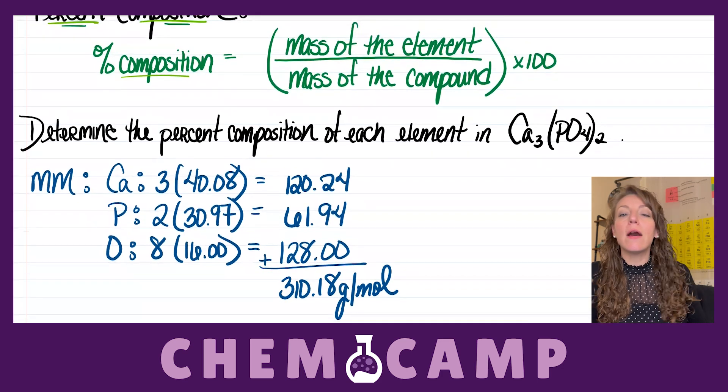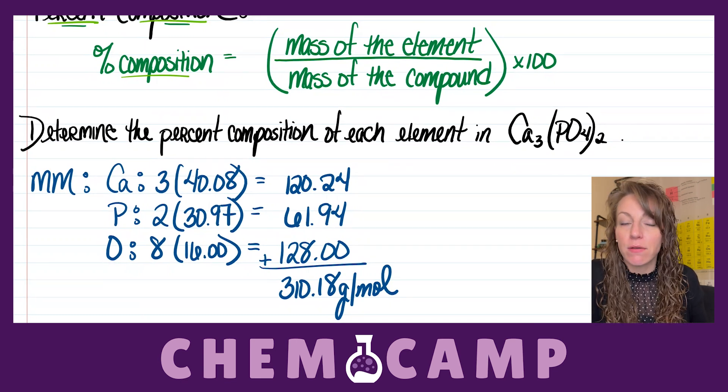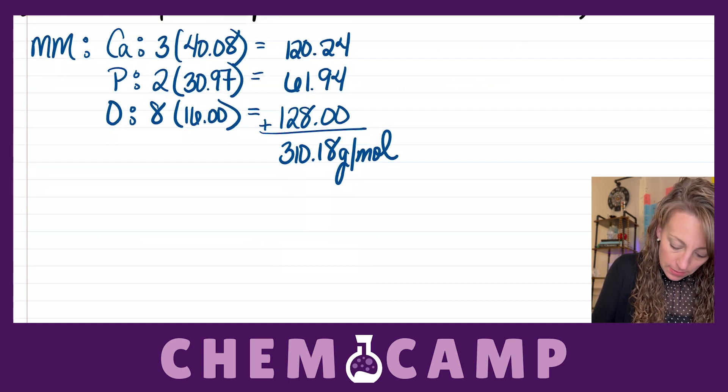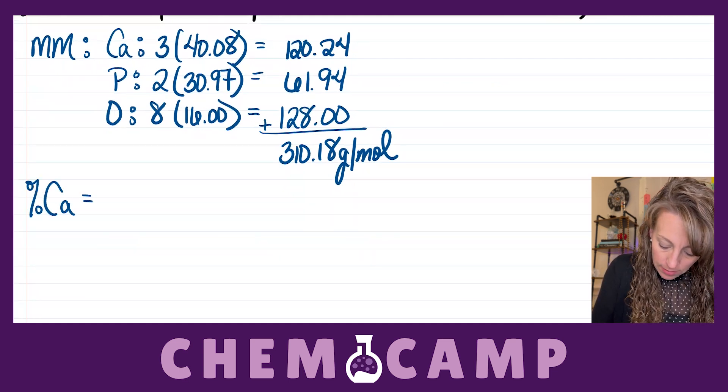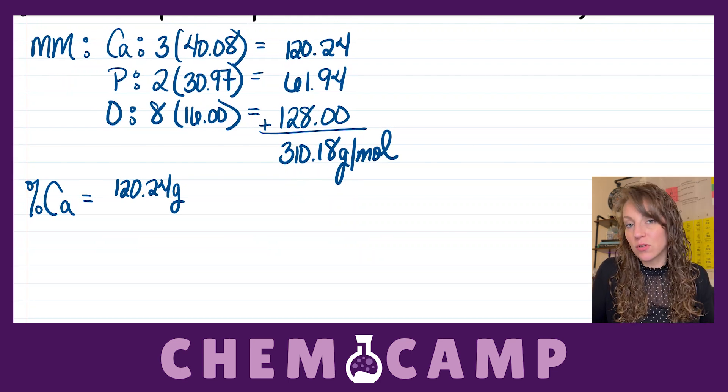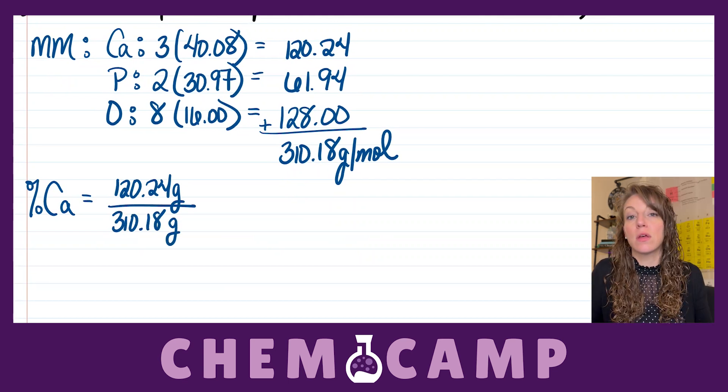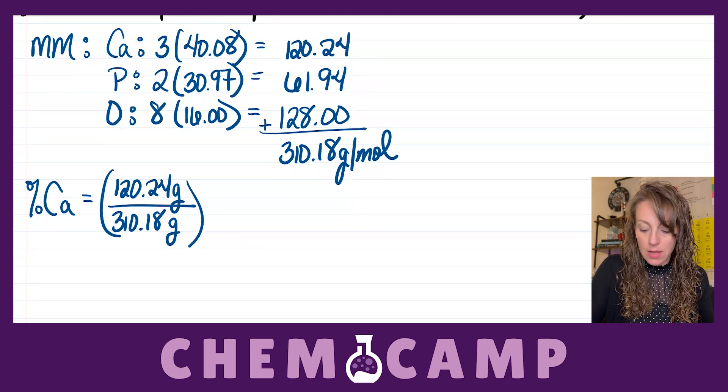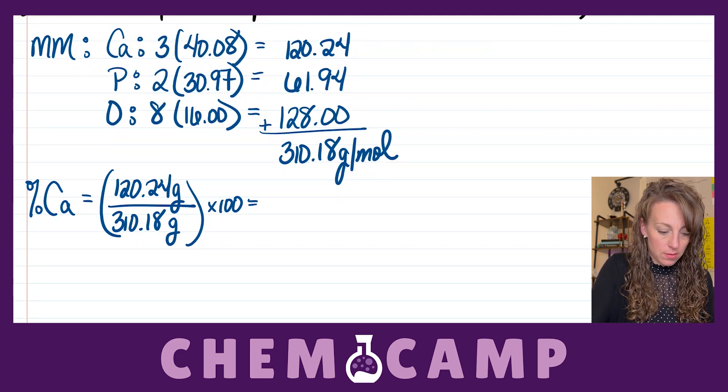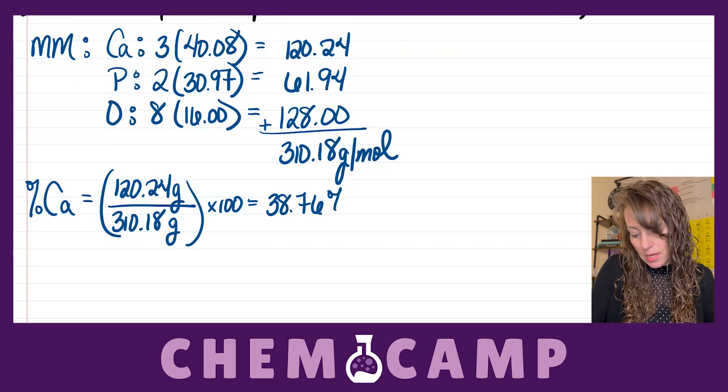Well, now I have the mass that each element contributes to the compound and the total mass of the compound. So, now I'm set to calculate percent composition. I'm going to start once again with calcium. And I'm going to take the 120.24 grams that the calcium contributes, divided by the 310.18 grams of the compound, and multiply by 100. Gives me 38.76 percent for the calcium.